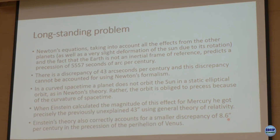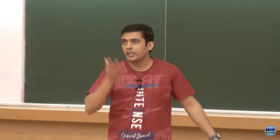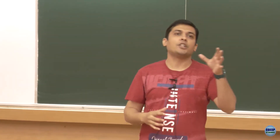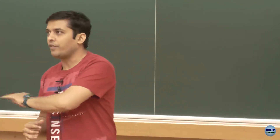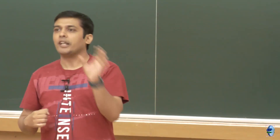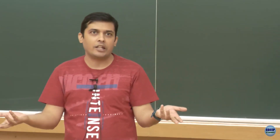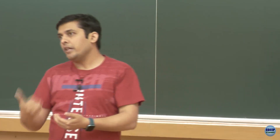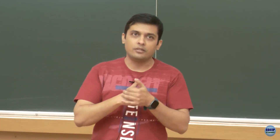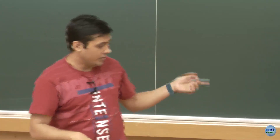This success made the theory of relativity very popular. Newton's law of gravitation is actually just an approximation of general relativity — it works fine when speeds are low and gravity is not too strong, but fails when gravity is very high or speeds are very large. That's how the precession issue was resolved.